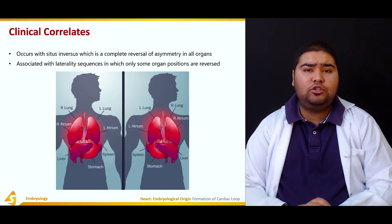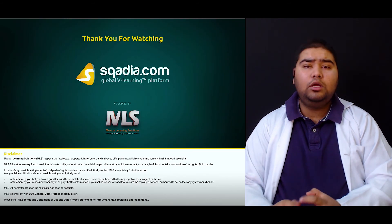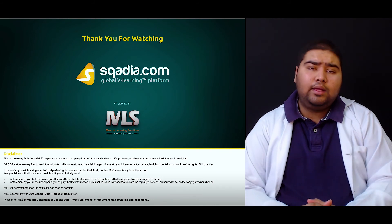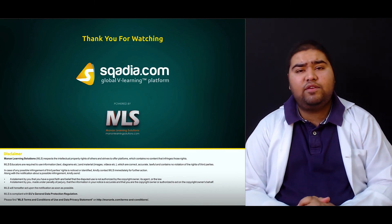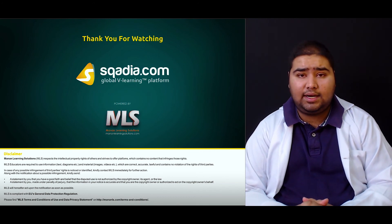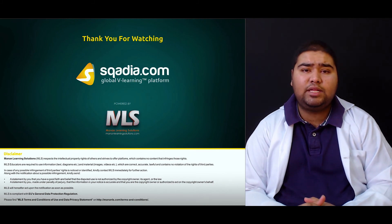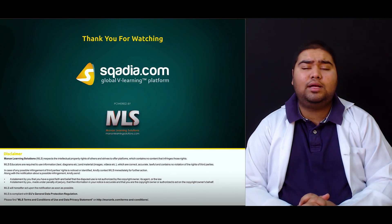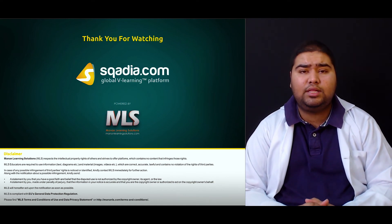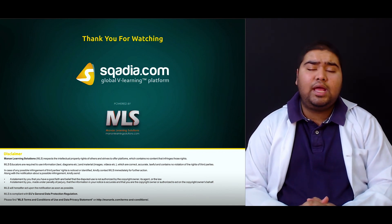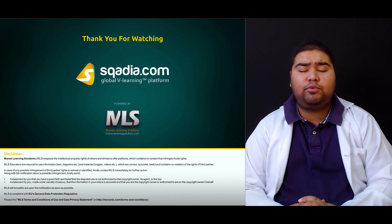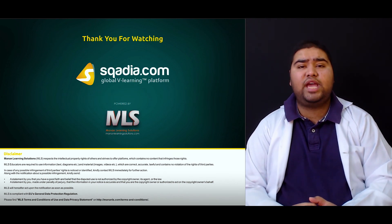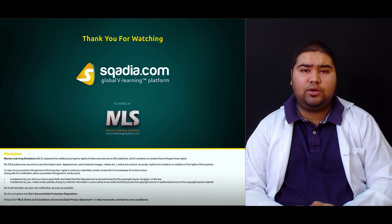In summary, this section covered how the heart tube loops upon itself to form the adult heart, which structures give rise to which adult structures, the role of cardiac jelly in the process, and how the common atrium, primitive left ventricle, primitive right ventricle, and the roots of the pulmonary and aortic outlets are formed. We also discussed dextrocardia as a defect in cardiac looping, and its association with situs inversus and laterality sequence. For further sections, keep watching scardia.com.